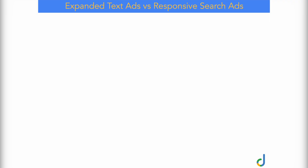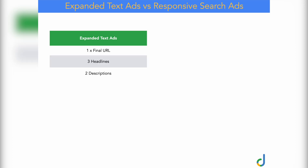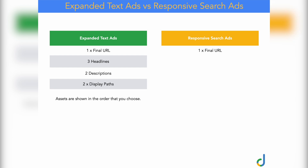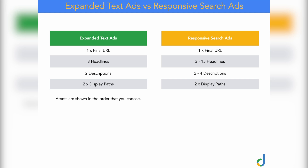Let's take a look at the difference between expanded text ads and responsive search ads. Expanded text ads have one URL, three headlines, two descriptions, and two display paths, and all assets are shown in the order you choose. With responsive search ads, you still have one final URL, but you can add up to 15 different headlines and up to four different descriptions, with the same two display path options. A key difference is that your assets can be shown in any order, so you need to make sure all your headlines and descriptions make sense regardless of the order they appear.